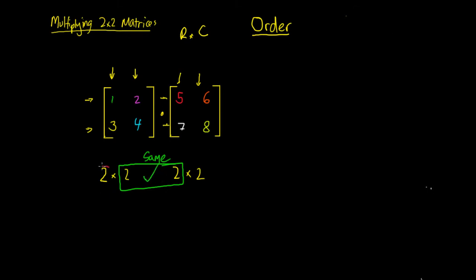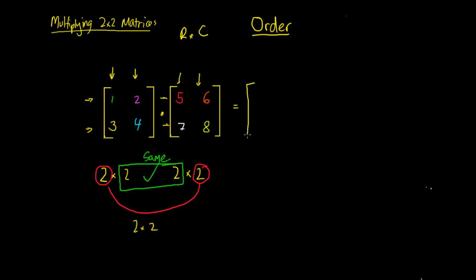What we said is that if we do multiply them together, the resulting matrix is going to have the outside numbers as its dimensions. So it's going to be a 2 by 2 matrix. We multiply a 2 by 2 matrix with another 2 by 2, and our resulting matrix is going to be 2 by 2.